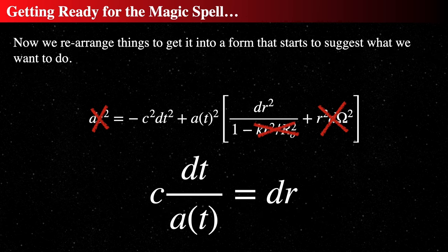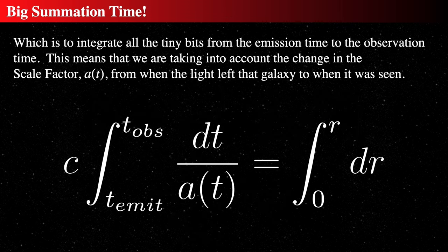Rearranging, we get c·dt = a(t)·dr, where c is the speed of light, dt is a little interval of time, dr is a little interval of distance, and a(t) is the scale factor. We then integrate — summing all the little contributions — from the time of emission t_emit to the time of observation t_obs on the left, and from 0 to r (the total distance traveled) on the right. That total distance r might be, say, 100 million light-years, and the time interval could span from when the universe was 100,000 years old to 13 billion years old.